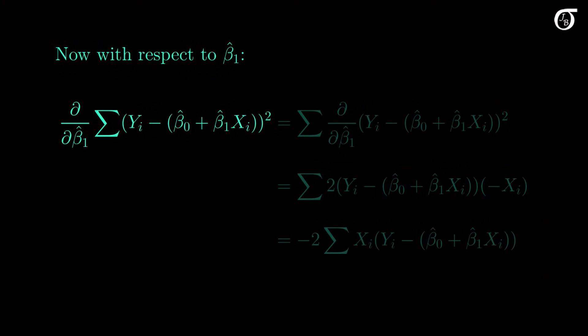Now with respect to beta1 hat. Again, the derivative of a sum is the sum of the derivatives. And again, by the power rule, the 2 comes out front and the exponent becomes 1. But again, we can't forget the chain rule. Once again, we must multiply by the derivative of what's inside the brackets.